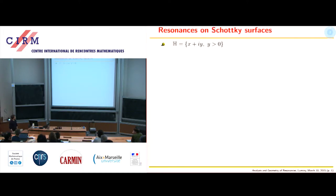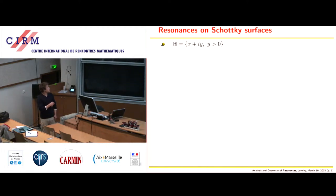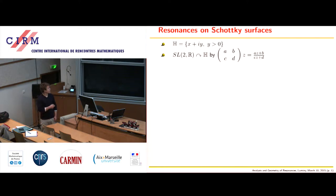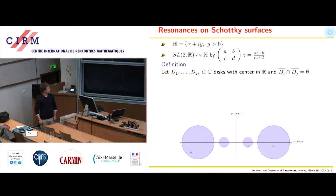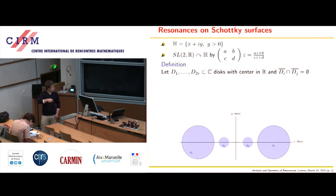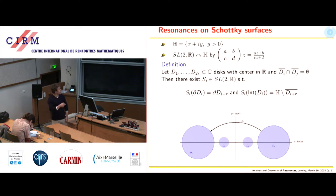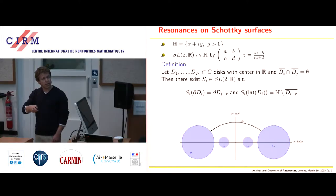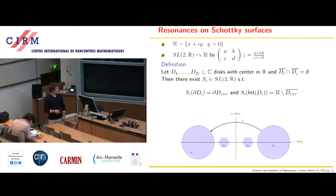I think I can rather quickly go through the definitions. We've seen several times that Schottky surfaces can be obtained from the upper half plane, with SL2R acting on it via isometries by Möbius transformations. Schottky groups can always be described by a so-called Schottky marking, which is simply some configuration of disks in the complex plane. Once such a configuration of disks is fixed, this configuration defines in a unique way a finite number of isometries S_i that map these circles onto each other.